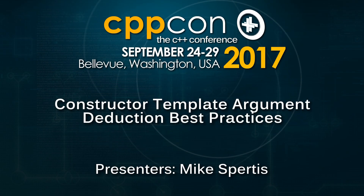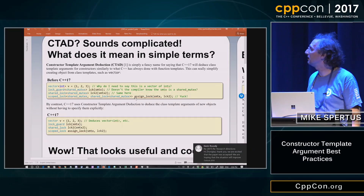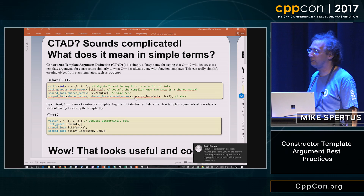I have a poster out on constructor template argument deduction best practices. You may notice it's the biggest poster with the smallest text of all the posters. I want to give you a little road map to the poster and the key ideas, because even though there's a lot here, this is a really simple and important feature in C++17 that we think is going to have a lot of impact.